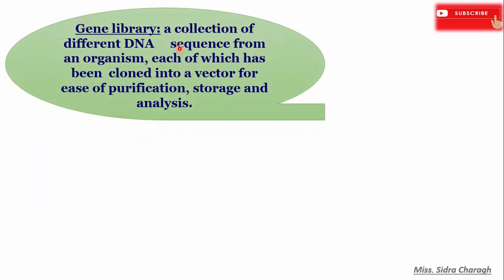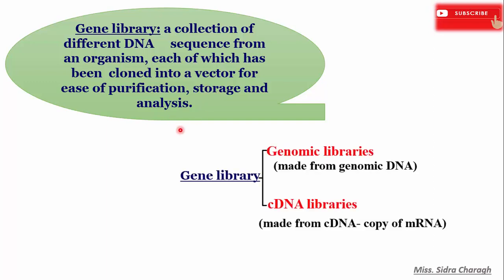A gene library is a collection of different DNA sequences from an organism, each of which has been cloned into a vector for use in purification, storage, and analysis. Gene libraries are basically of two types: genomic libraries and cDNA libraries. Genomic libraries are made from genomic DNA, while cDNA libraries are designed from cDNA, which is a copy of messenger RNA.